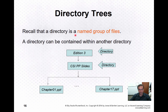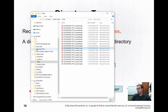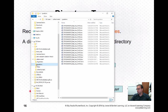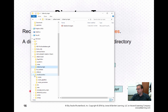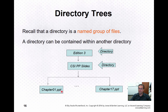Here's an example: you might have a directory called 'edition three,' then a subdirectory called 'ppslides,' and within there, files like chapter1.ppt, chapter7.ppt, etc. Leaf nodes generally would be files in the directory tree. You can see these directory trees when you open something like Windows Explorer — directories are generally shown as manila folders, and inside directories you can have other directories or files. For example, .py would be the extension for a Python file.